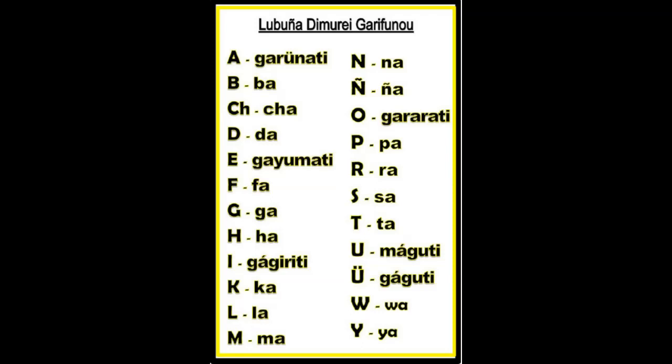I is Gagiriti. K is K. L is La. M is Ma. N is Na. Eñe is Nya. O is Gararati. P is Pa. R is Ra. S is Sa. T is Ta. U is Maguti. W is Wa. And Y is Ya.